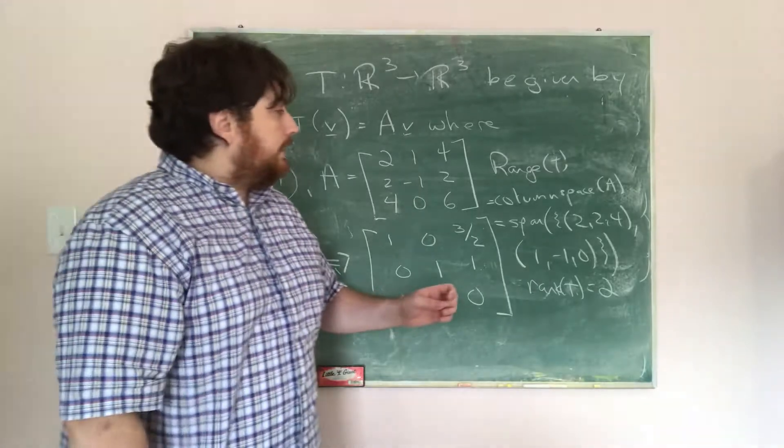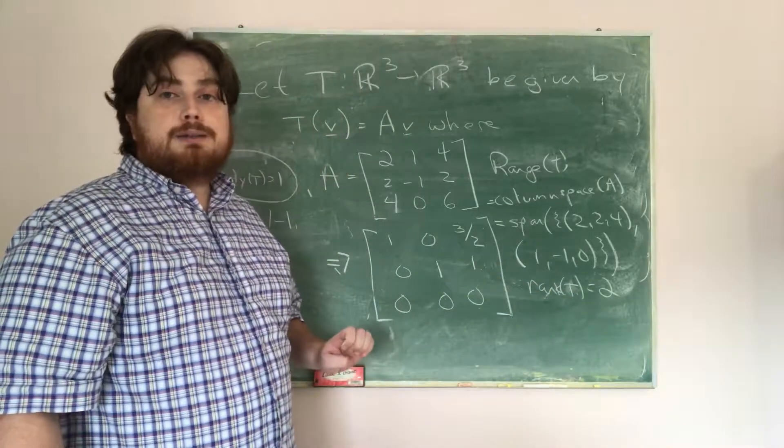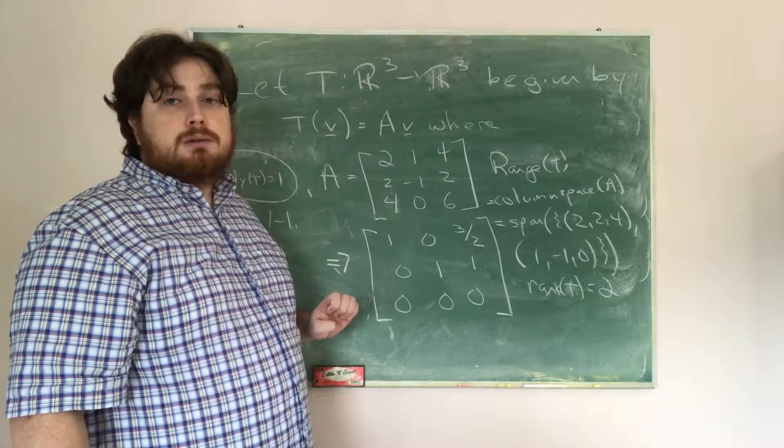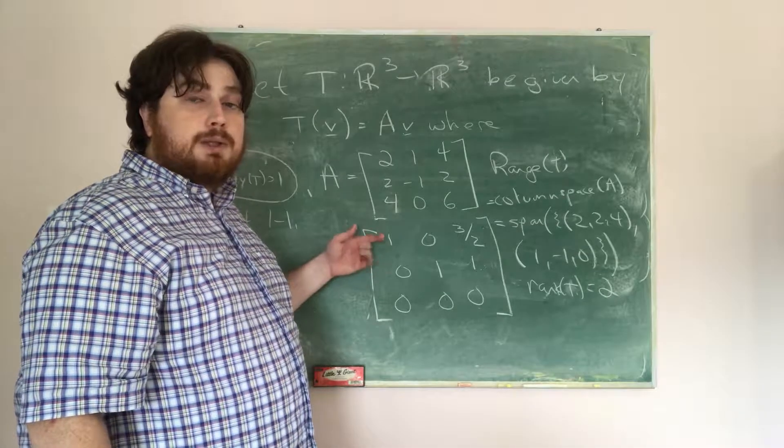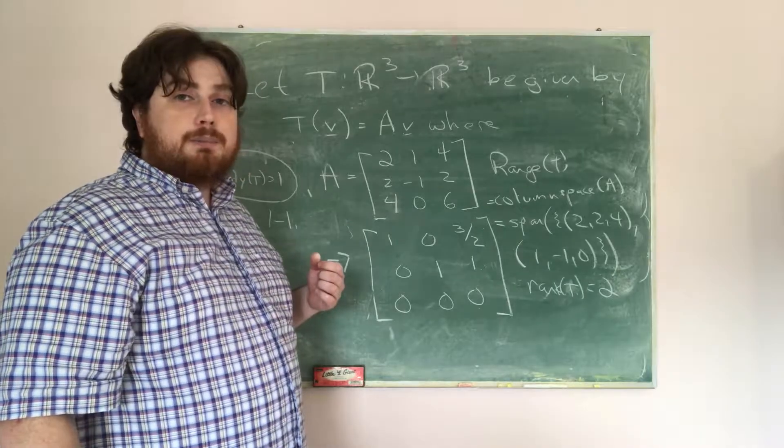Now, in order to check whether or not it's onto, what I want to do is check the rank, and the rank has to be equal to the number of rows. In this case, what we have is that, well, the rank is 2, but the number of rows is 3. Therefore, this is not an onto mapping.